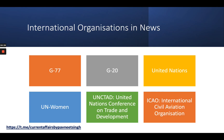G77 is a coalition of 134 developing states formed at the United Nations for joint negotiation and promotion of economic interests. G77 is a group of developing countries with 134 members who have come together at the UN platform to jointly negotiate and promote each other's economic interests. Please note — do not confuse the fact that G77 has 77 members; it actually has 134 members.